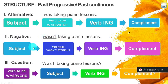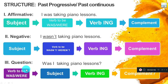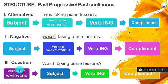For the negative form, we're going to use the verb 'to be' in the negative form — wasn't or weren't — plus a verb with -ing. For the question form, we use 'was' or 'were' but they change place with the subject, plus another verb with -ing.